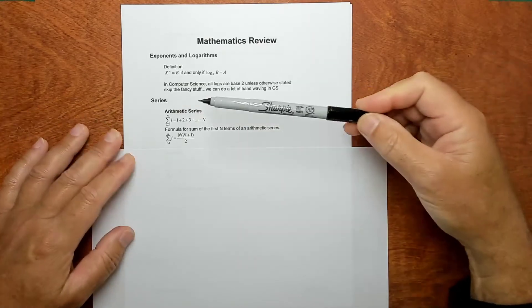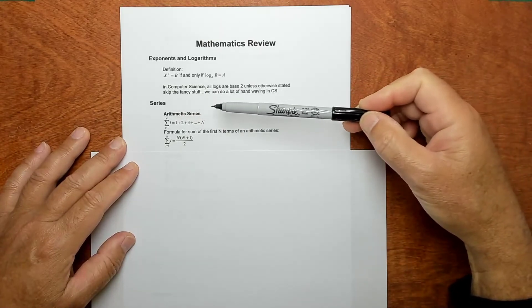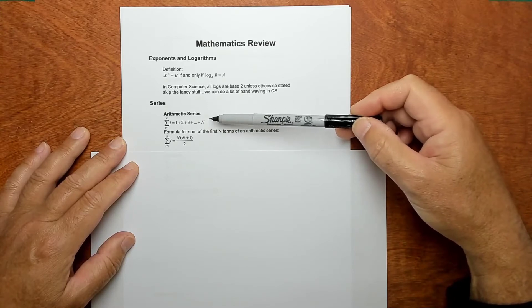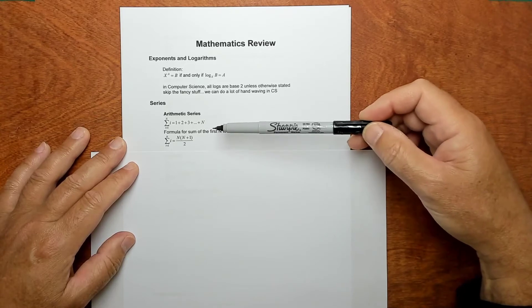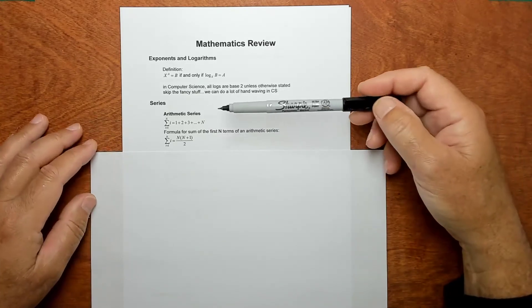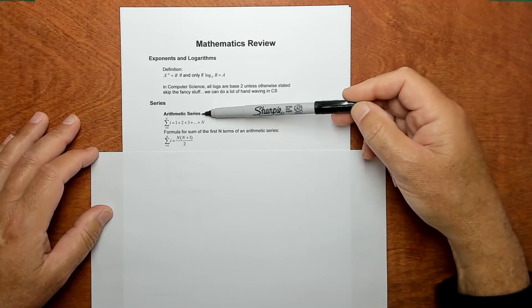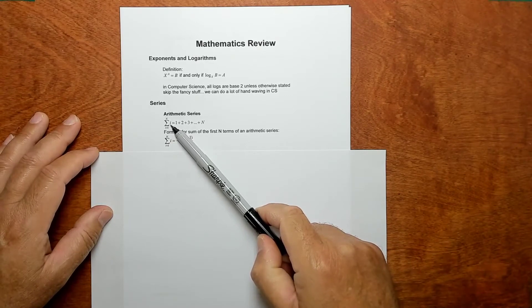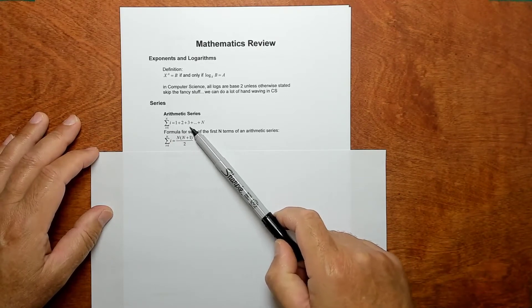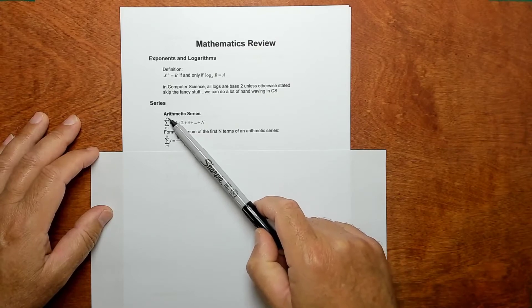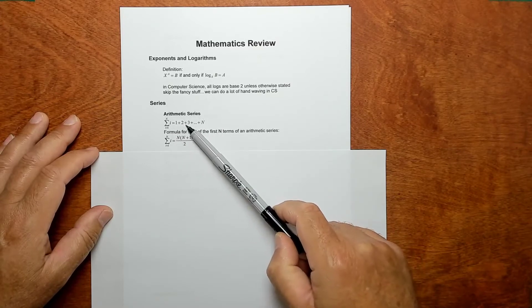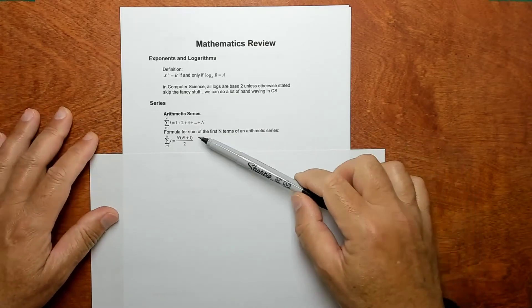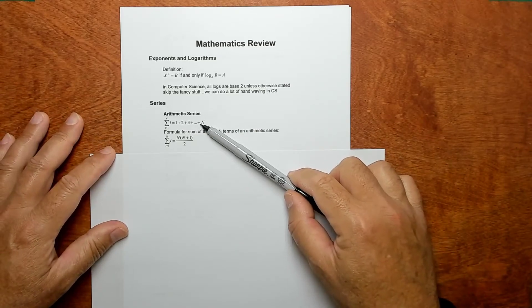The purpose of going over this math is just to have a vocabulary, some examples that we can use throughout the course to talk about code and algorithms and things. So there's something called an arithmetic series. There's this little sigma symbol. The sum of elements i, as i goes from 1 to n, would just be like this. If i goes from 1 to n, then there would be 1 plus 2 plus 3 all the way out to n. So it turns out that we have a formula for this. There's a formula for this series.